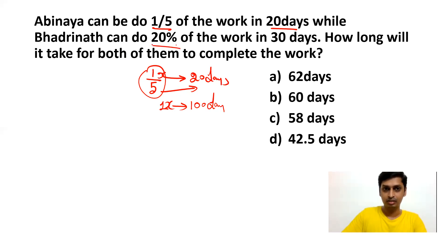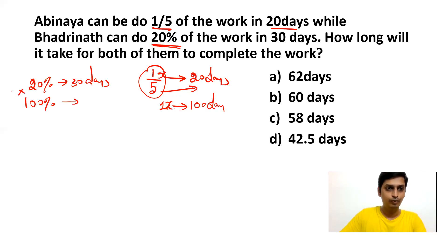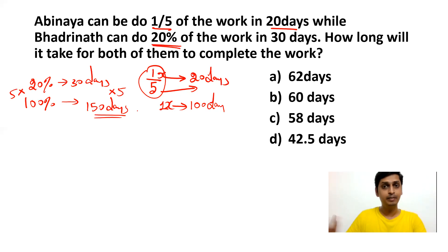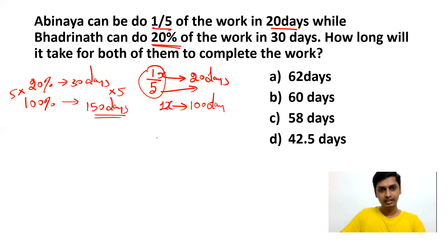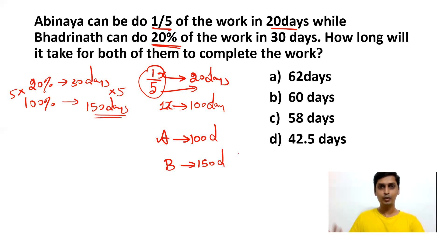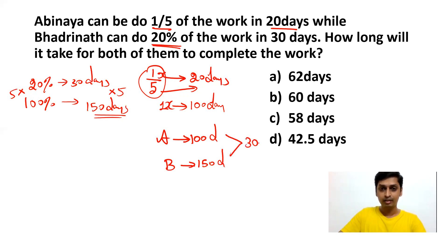Similarly, Badrinath can do 20% of the work in 30 days. To do 100% of the work, multiply by 5: 30 × 5 = 150 days. So Badrinath completes the whole job in 150 days. Now, since we don't know the total work, we take the LCM of 100 and 150, which is 300. Finding LCM and HCF is very important not only for CTS but for all competitive exams.